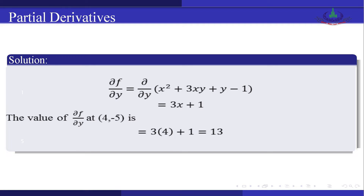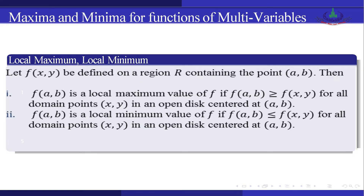Dear students, now we define local maximum and local minimum. Let f(x, y) be defined on the region R containing the point (a, b). Then f(a, b) is a local maximum value for f if f(a, b) ≥ f(x, y) for all domain points (x, y) in an open disk centered at the point (a, b).